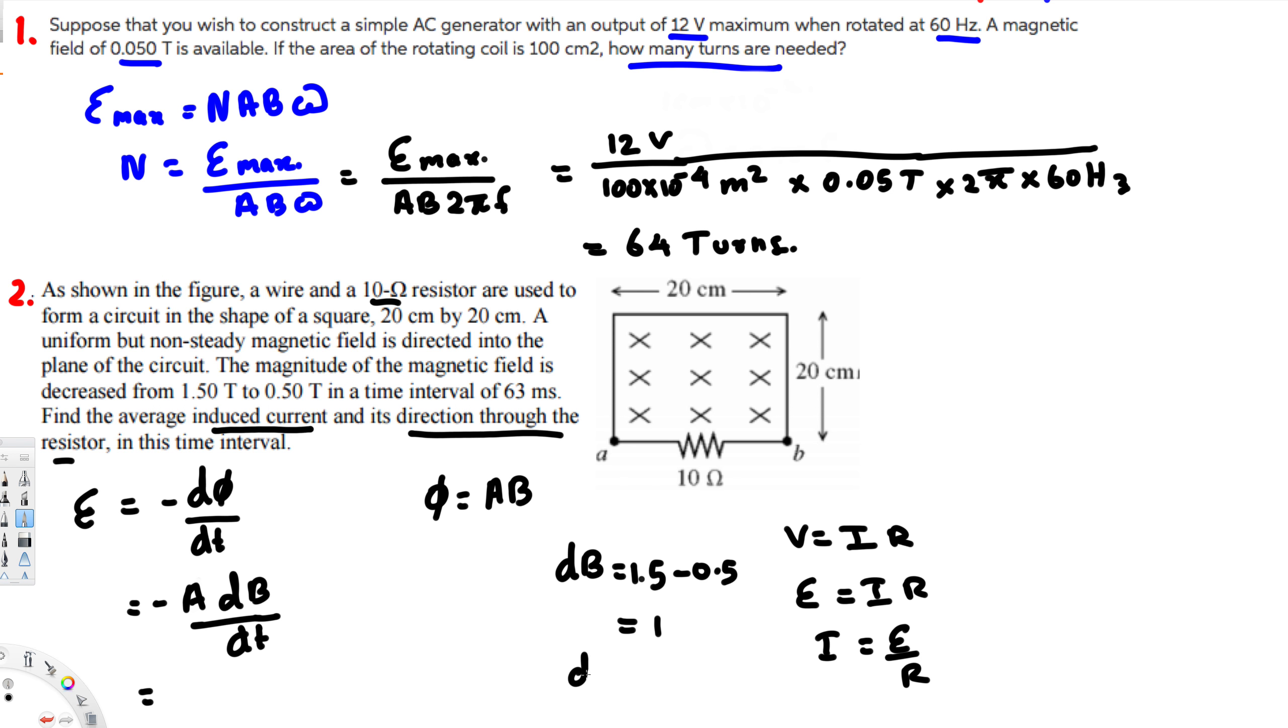dt is provided, that is 63 milliseconds, which is 63 times 10 to the power minus 3 seconds. Area is 20 times 20, so if you want to convert that into meters, this is going to be 0.2 times 0.2, which equals 0.04 meter square. Now we have all the values. Area is 0.04, dB is 1 since we subtracted initial minus final, and dt is 63 times 10 to the power minus 3. If you calculate this value, you should get 0.635 volts.